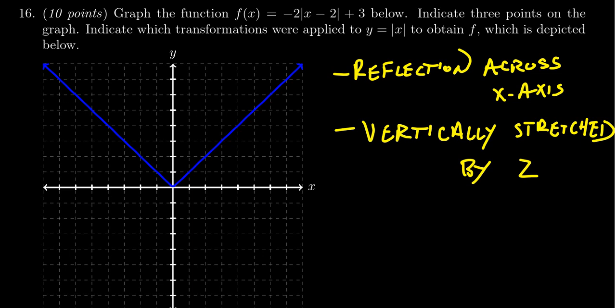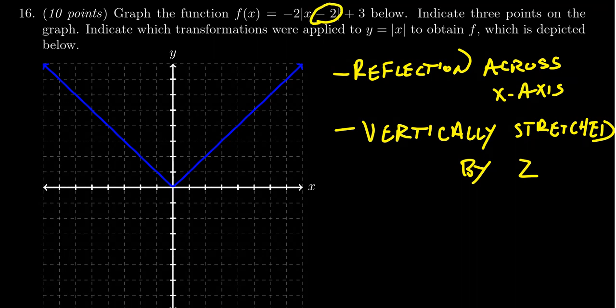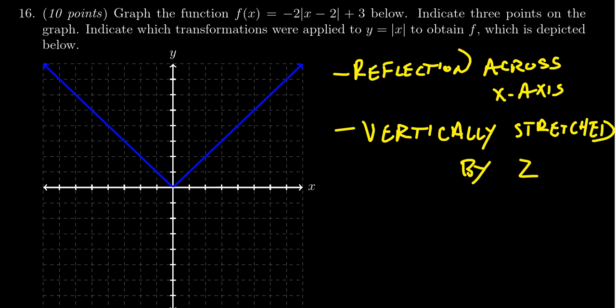What does this negative two inside of the absolute value mean? If we're inside the absolute value, because that was the original basic function, then we're in the horizontal zone. So x minus two inside the absolute value suggests there is a horizontal shift, but it's a shift in the positive direction. So we have a shift right by two.